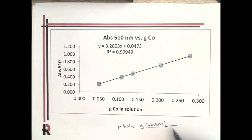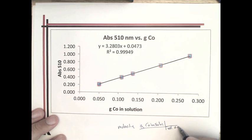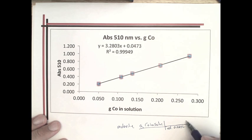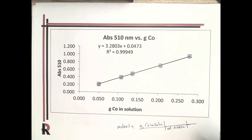divided by the volume of the solution, which is 0.025 mL or 0.025 liters. And then you'd also have to divide by the molecular weight of the cobalt chloride dihydrate that you had,